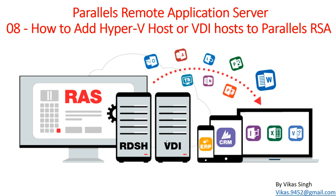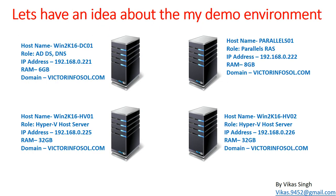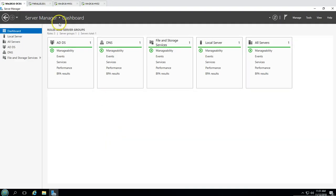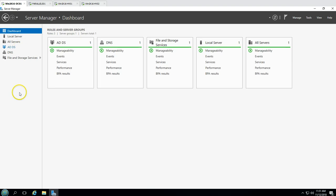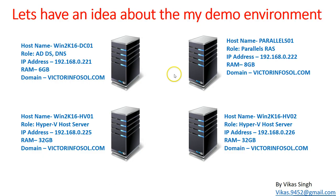Let's look at my demo environment. We have four virtual machines in this demo. The first is VIN2K16DC01, which is my Active Directory and DNS server that we've been using since the second video. My domain name is victorinfosol.com. You can see the Active Directory DNS role is running, and the domain name is victorinfosol.com.